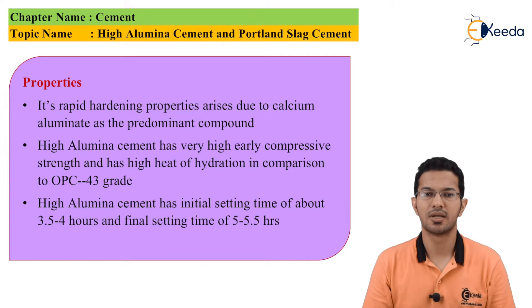High alumina cement has an initial setting time of about 3.5 to 4 hours and a final setting time of 5 to 5.5 hours.